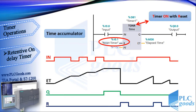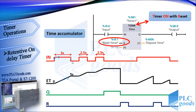Now let's see how this timer works. First, suppose there are three pulses at the IN input. When the signal state at the IN input changes from 0 to 1, the time measurement is executed. The time values are increased and accumulated when the IN input has signal state 1. For the first pulse, the ET values start from 0 to 5 seconds. When the signal state at the IN input changes from 1 to 0, the ET output holds the elapsed time, which is 5 seconds.